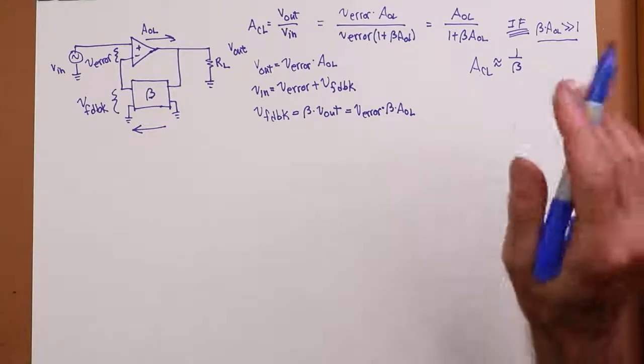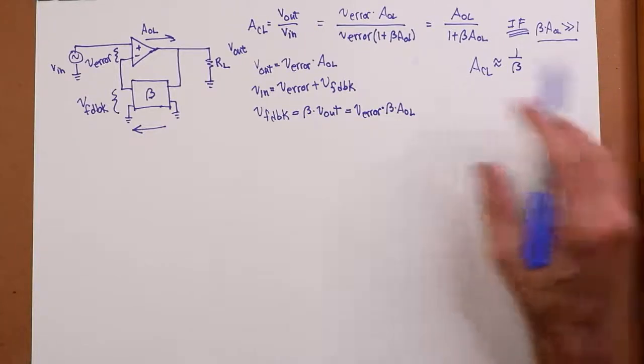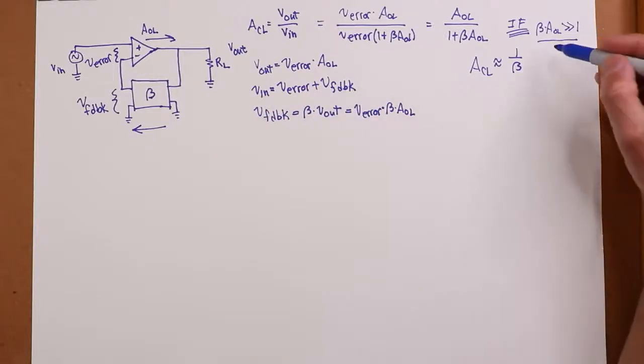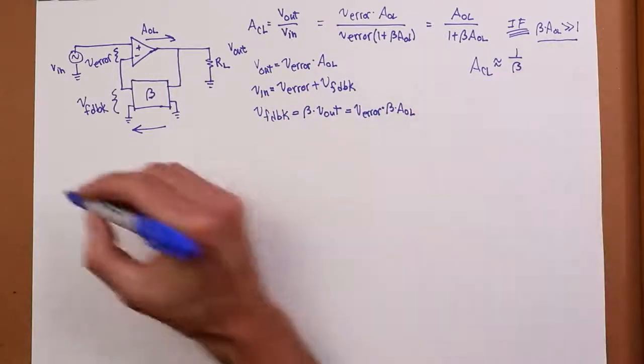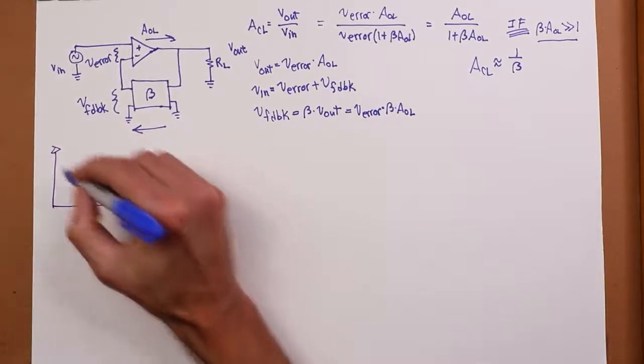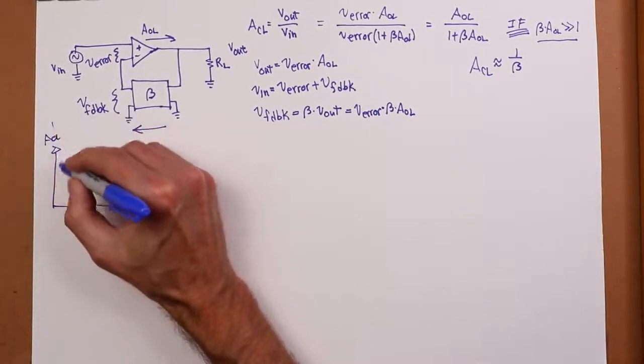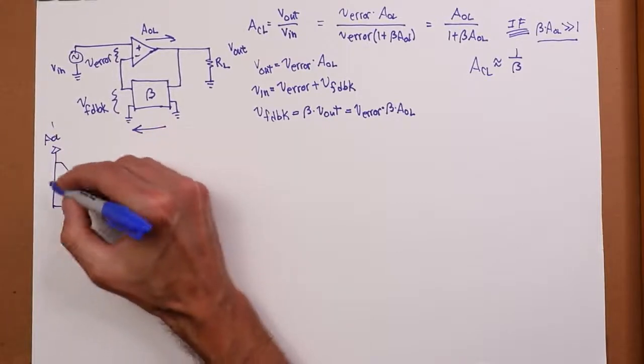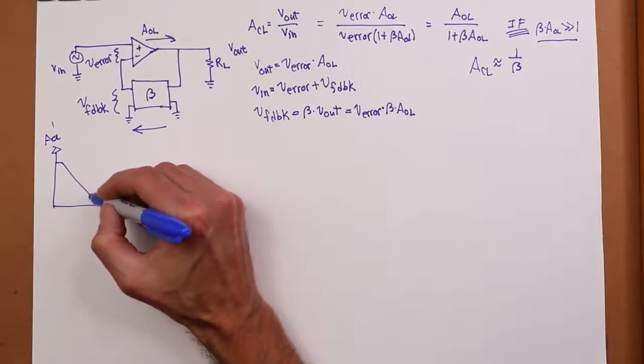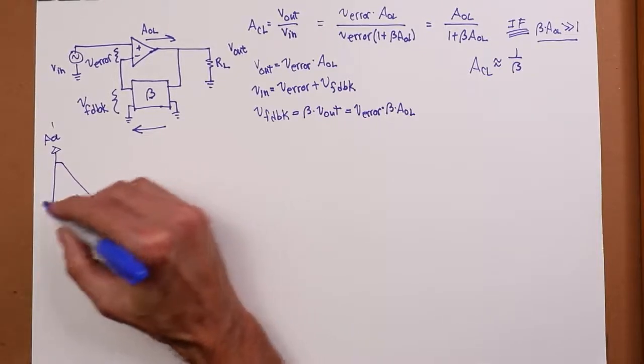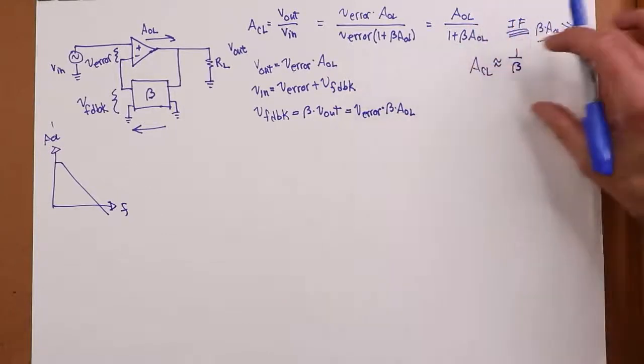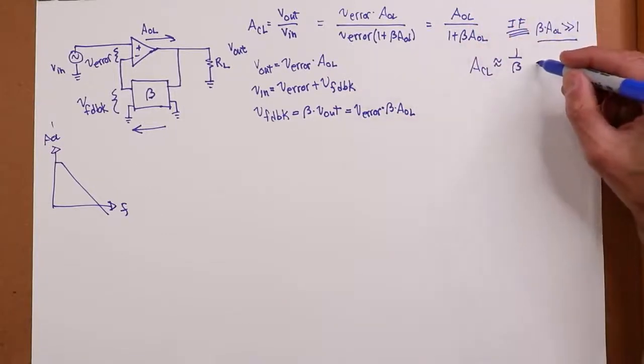Now, remember, that's an approximation. As we go up in frequency, A open loop starts to drop off. Remember, we have a response curve that looks kind of like this. So back here, it might be much, much greater than one, but up here, it might not be. So, things start to kind of die off. But for that good range of frequency, this is a really good approximation.